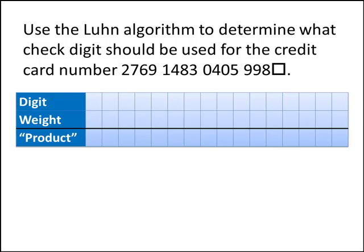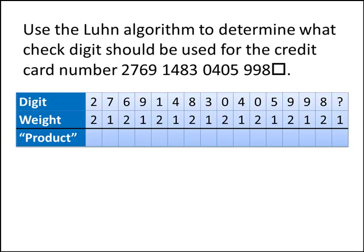Well, we're going to create the same table that we had before. We're going to fill in the digits in our first row, and we're going to put in a question mark for that last digit, because we don't know what that digit should be. But we do know that our weight pattern is still 2, 1, 2, 1, and so on. And we can fill in all the products using the method that we just talked about, except for the very last product is going to be whatever the question mark is, times 1 will be the same question mark.